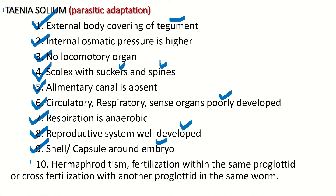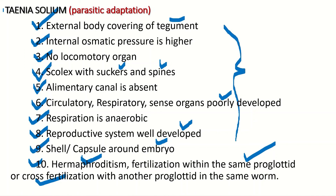One of the parasitic adaptations of Taenia solium is hermaphroditism. The hermaphrodite condition is found in these organisms, and fertilization can take place within the same proglottid, or there can be cross-fertilization with another proglottid in the same worm. These are some of the different types of adaptations particularly found in Taenia solium.